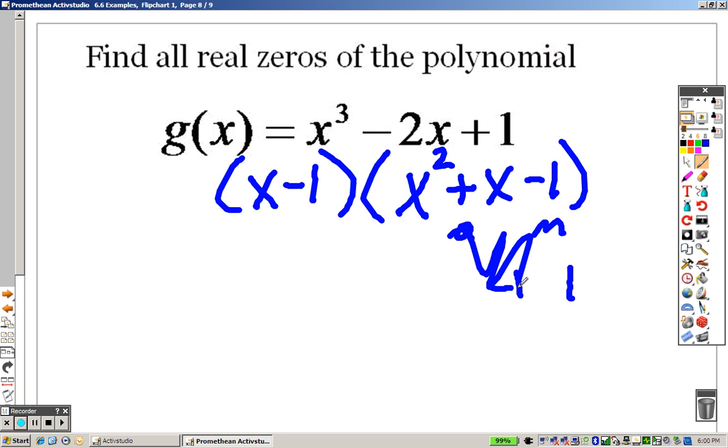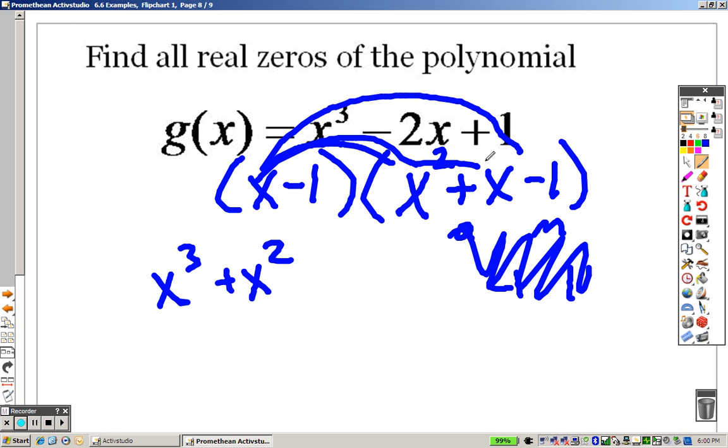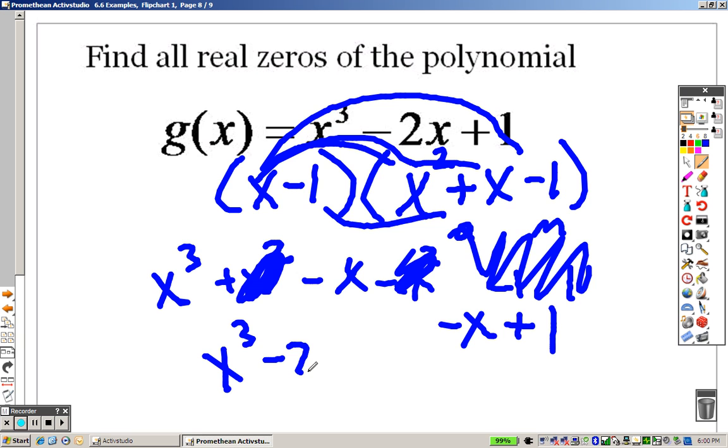And once again, this is something to keep in mind for you here. You can double check your work to see if the factors work. That is x cubed, that is x squared, that is negative x, that's a negative x squared, right? That is a negative x, that is a positive 1. So when we add them all together, those cancel out, those add together, and you get x cubed minus 2x plus 1, which is exactly what we have. So you can always check your factors and see if they are the right ones.